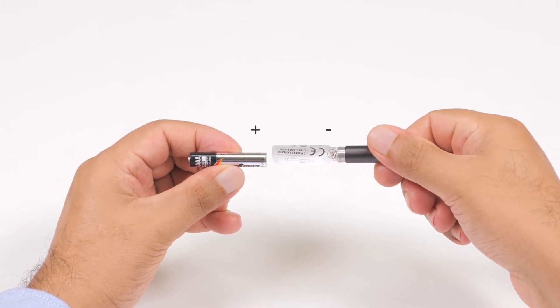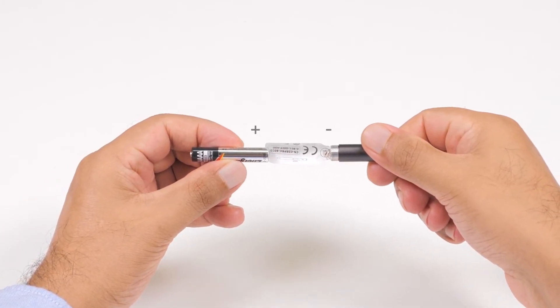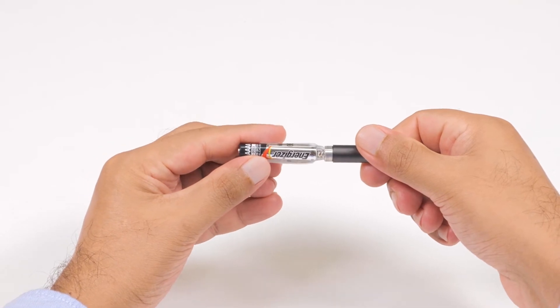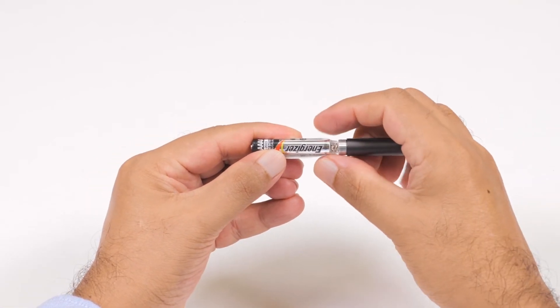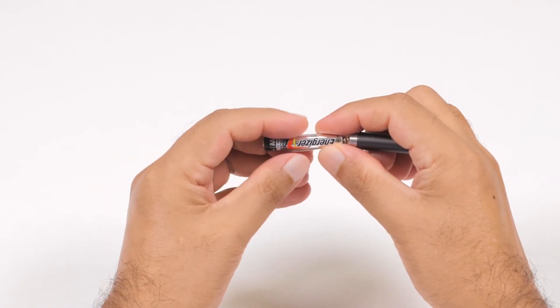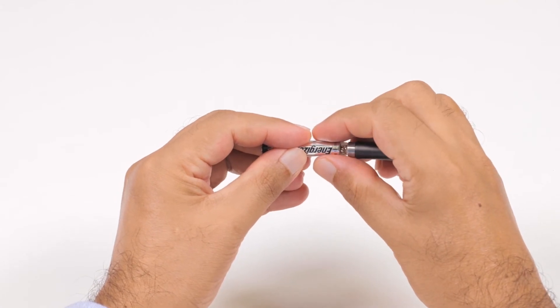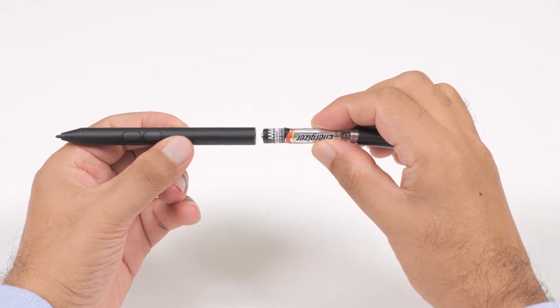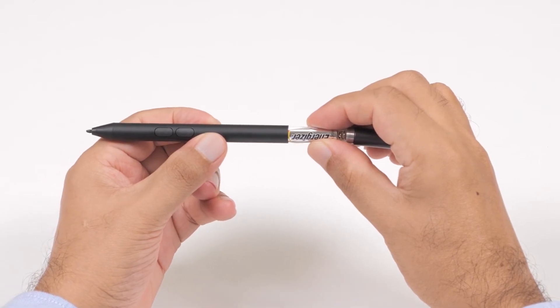Align the quadruple A battery with the positive side pointing towards the bottom of the pen. Place the top of the pen onto the bottom and twist it clockwise to tighten.